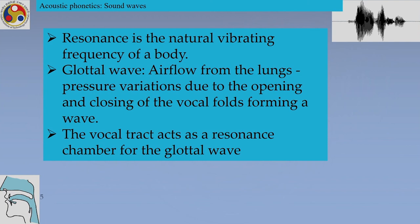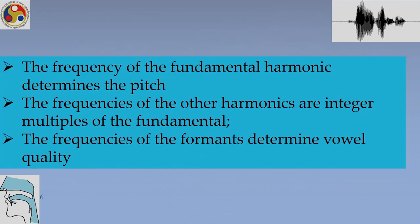The vocal tract acts as a resonance chamber for the glottal wave and gives it a particular shape. The frequency of the fundamental harmonic determines the pitch that we hear. The frequencies of the other harmonics are integer multiples of the fundamental. The frequencies of the formants determine vowel quality. There is a difference between the formants and the fundamental frequency.